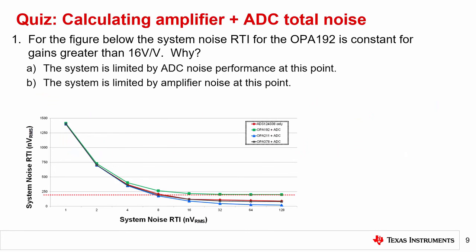Question 1. For the figure shown, the system noise RTI for the OPA192 is constant for gains greater than 16 V/V. Why?